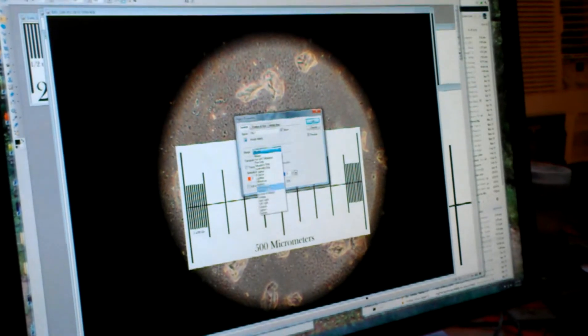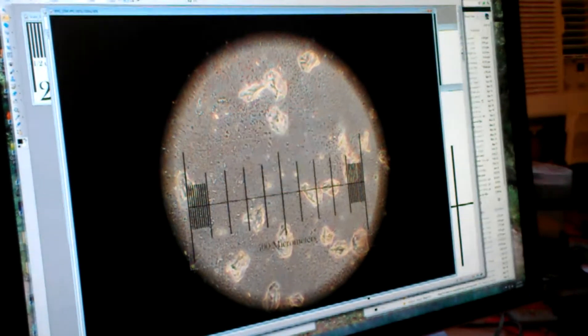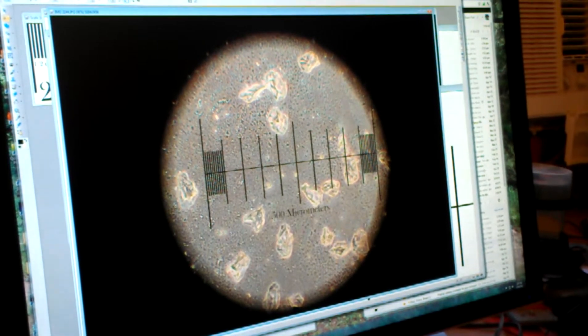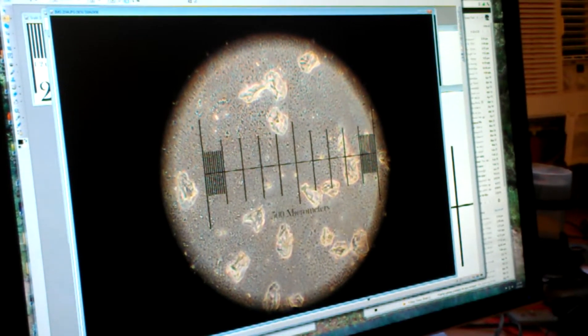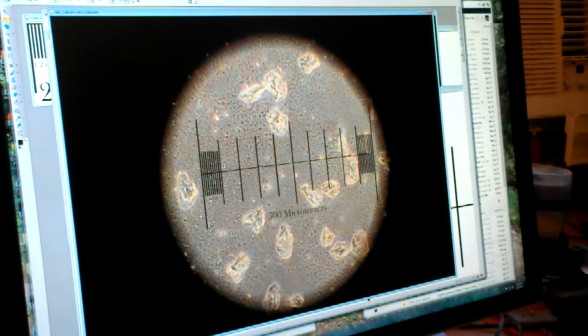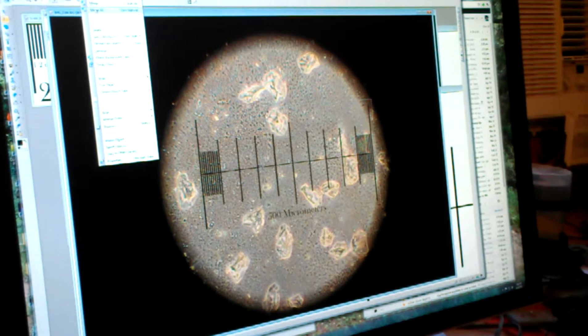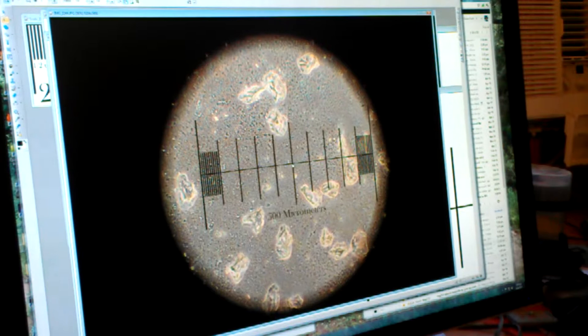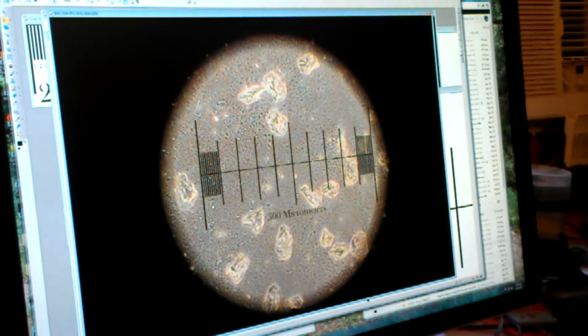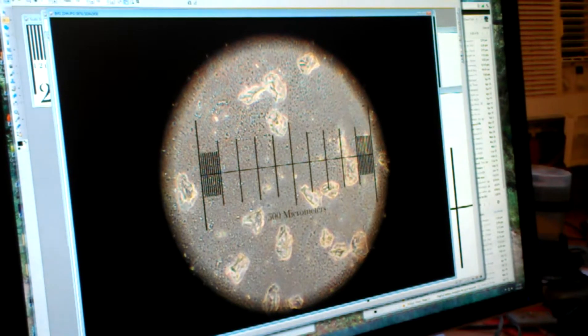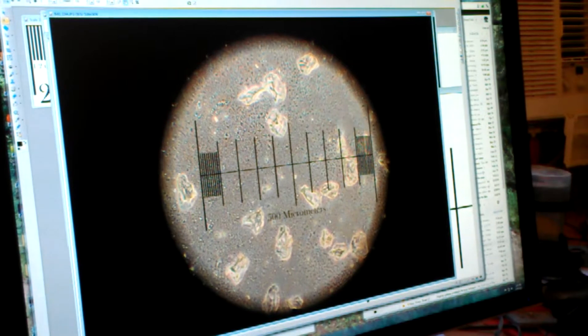So let's set it for darker and then there we go. Okay, so these are cells from the inside of my cheek. They're about 50 microns across, so about half the width of the paramecium that we took photos of with the cell phone.